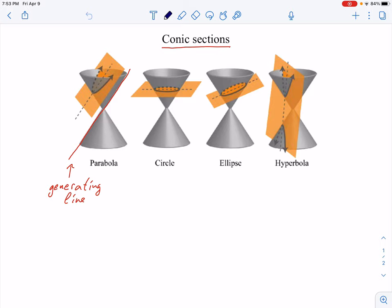For the parabola, think about the generating line which is marked there in red. This is the generating line of the cone. So when you spin this line you can create the cone. So if you cut the cone by a plane which is parallel to this line you get the parabola.